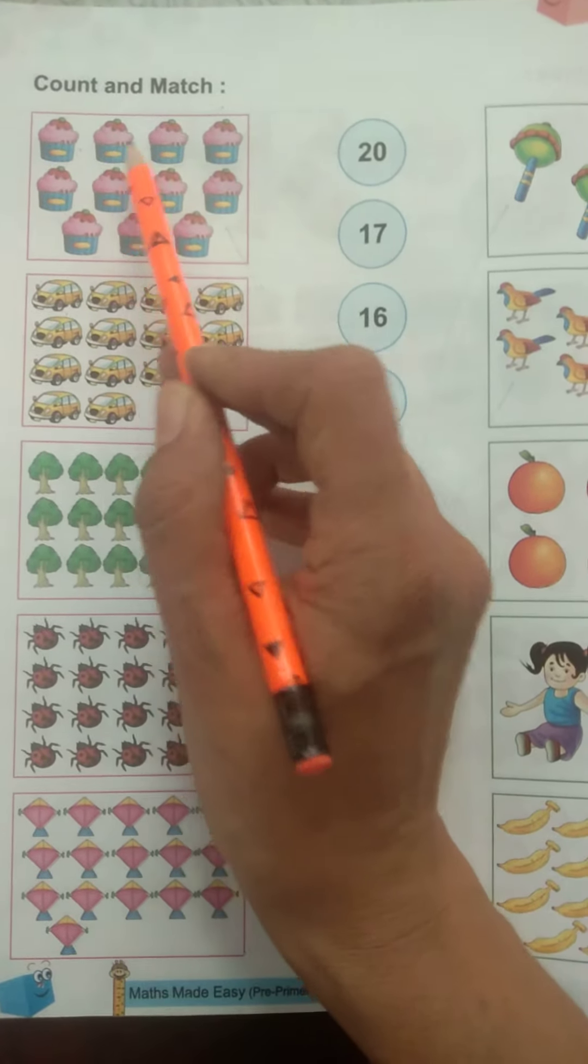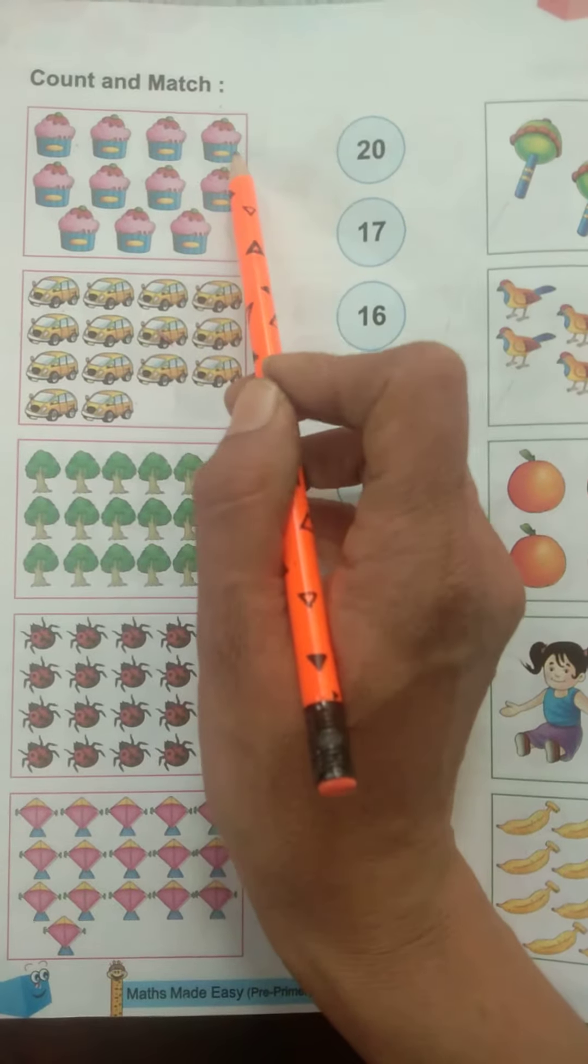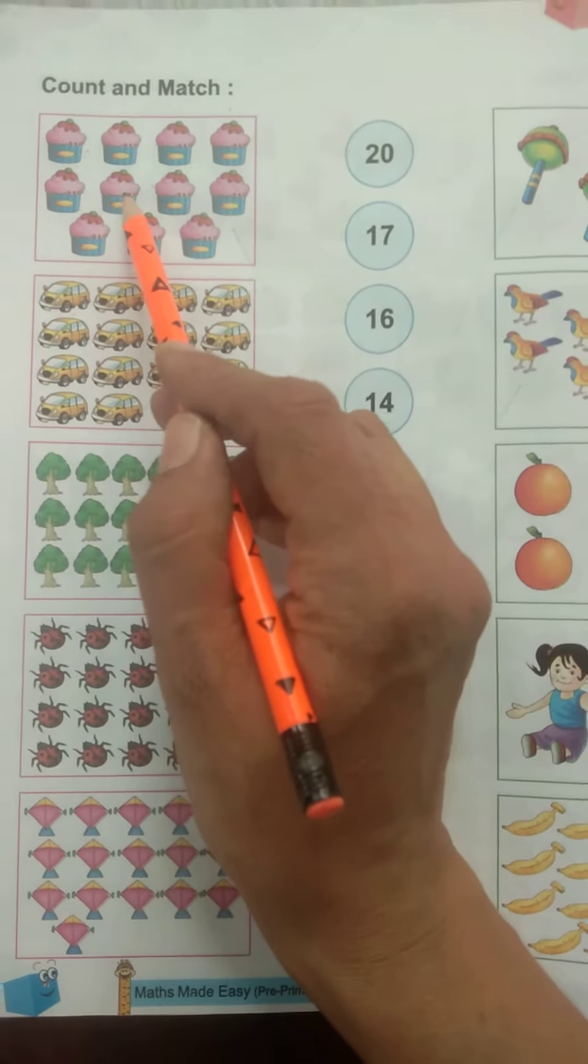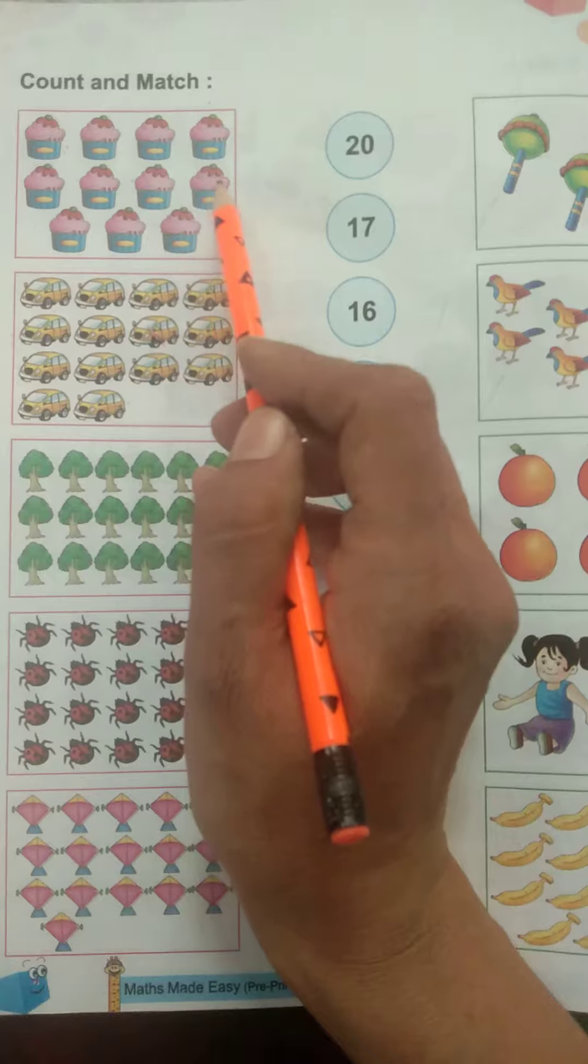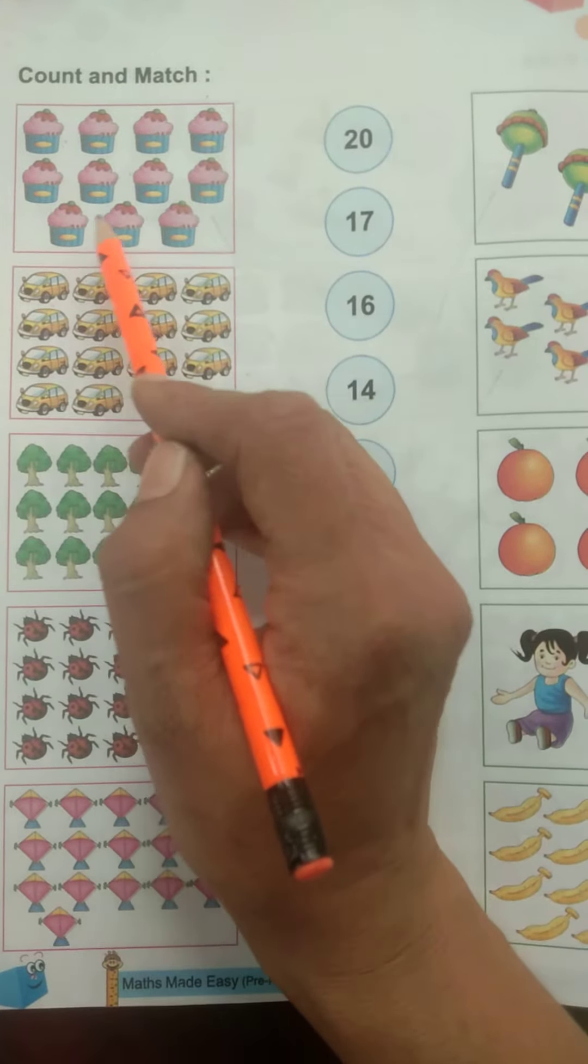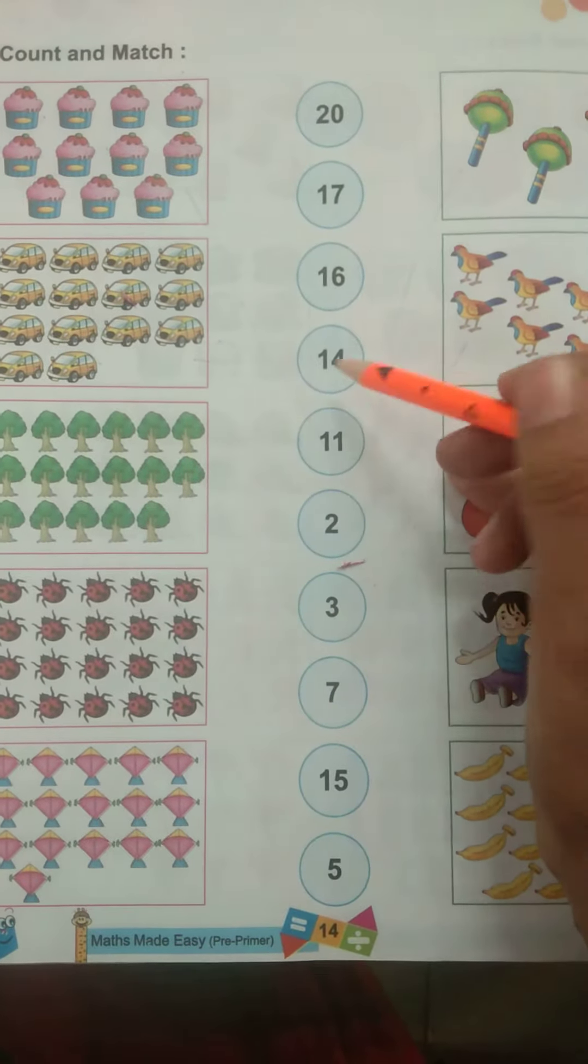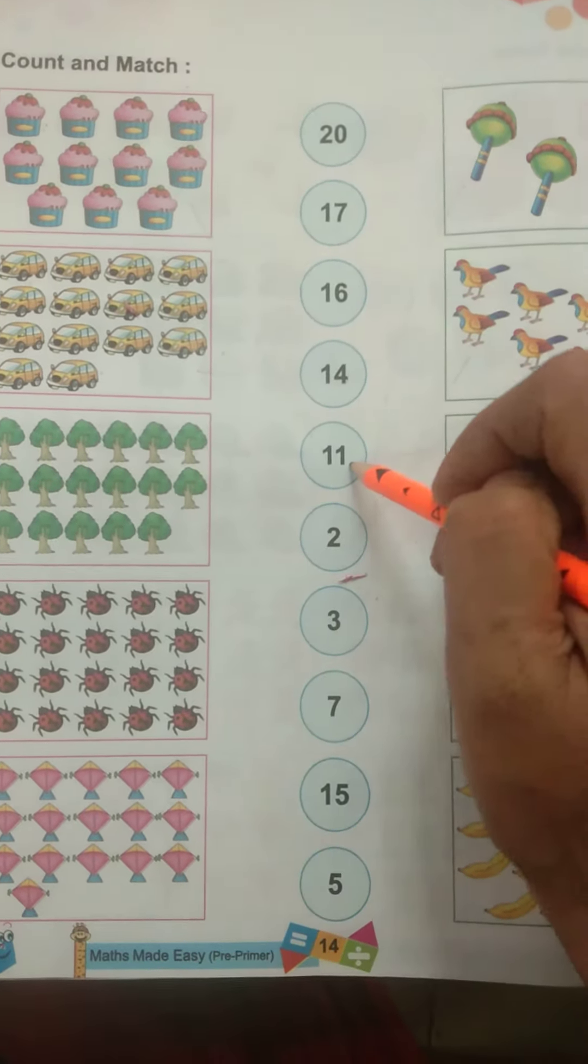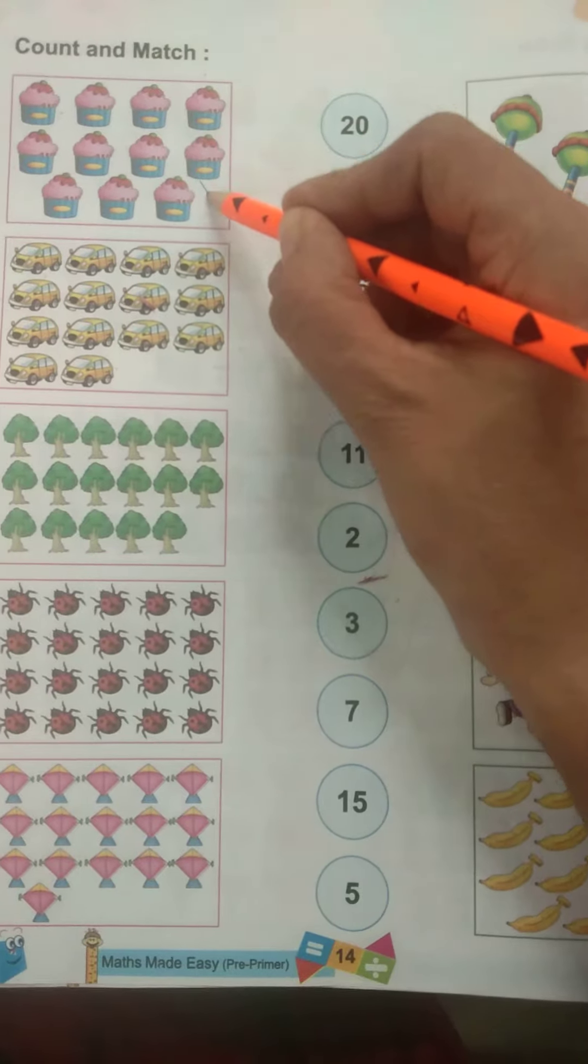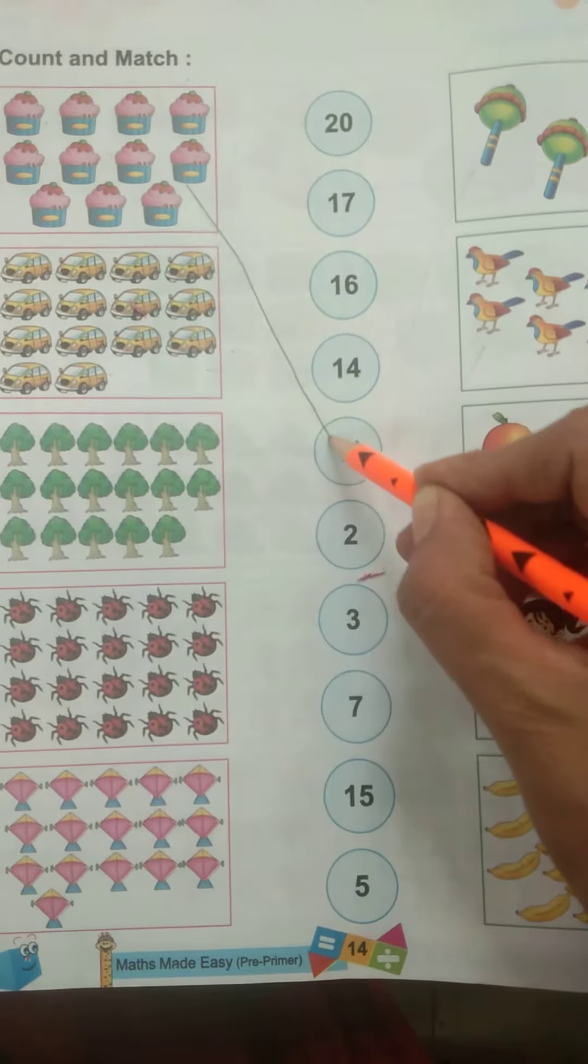1, 2, 3, 4, 5, 6, 7, 8, 9, 10, 11. And where is 11? This is 11. And we match these cupcakes with 11.